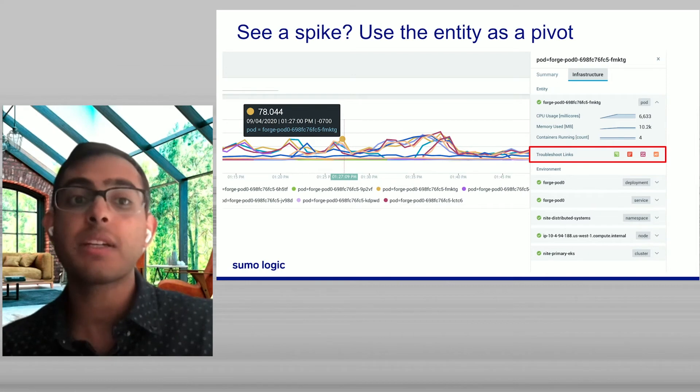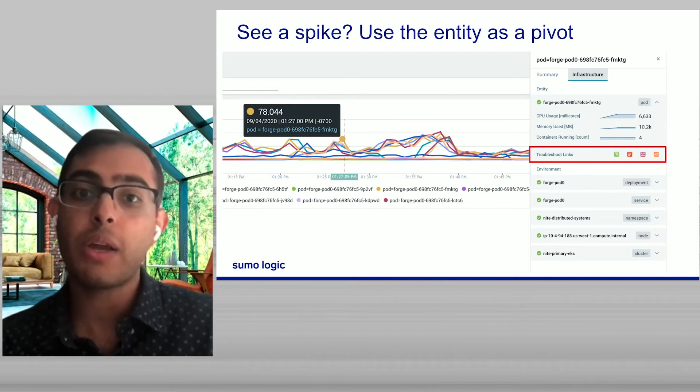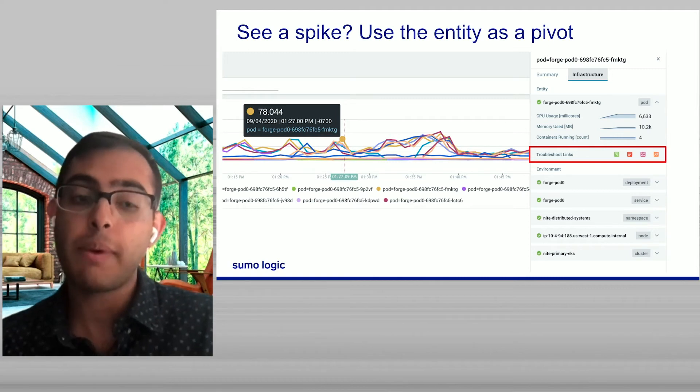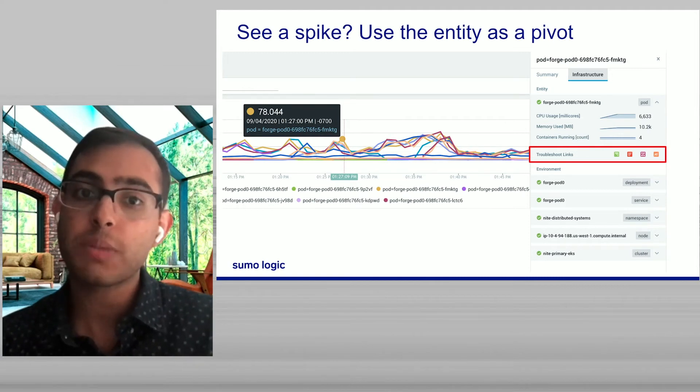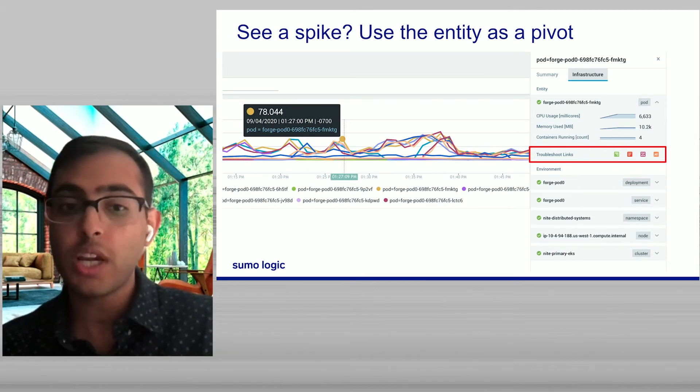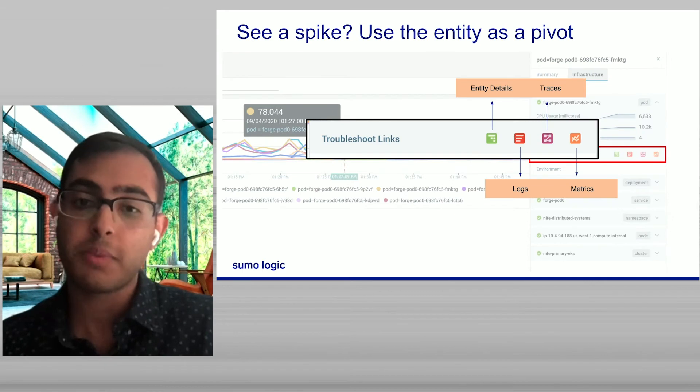Furthermore, anytime I see a spike anywhere in the product, because it has an entity mindset, I'm now able to use that entity as a pivot. I'm able to ask the question, what produced this spike? And how is the spike related to the other objects at play? Furthermore, if I need to change where that spike drives me, I'm able to use the entity as a pivot point to go drive into logs, metrics, or traces, or even the entity details, depending on where I feel my hypothesis is leading me.